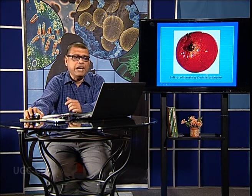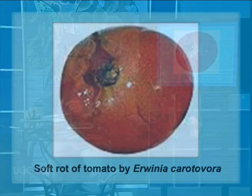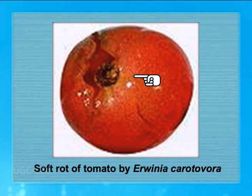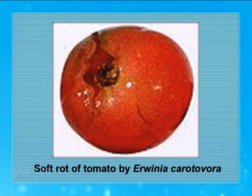Not only fungi, but some bacteria can cause soft rot. Erwinia carotovora causes soft rot of tomato by producing the enzyme polygalacturonase, which destroys the outer skin of the tomato, making it rot more quickly and reducing the shelf life of the tomato.